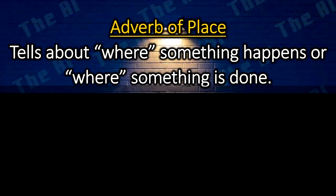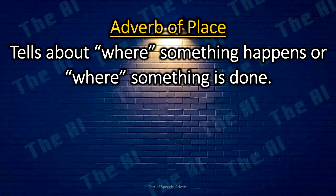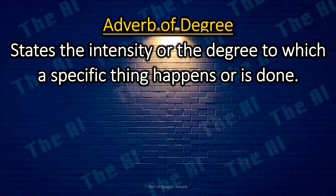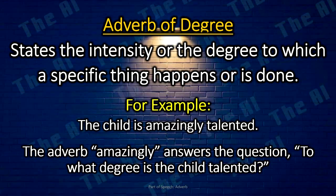Adverb of place. The adverb of place tells something about where something happens or where something is done. For example: I looked everywhere. The adverb everywhere tells where I looked. Adverb of degree. The adverb of degree states the intensity or the degree to which a specific thing happens or is done. For example: The child is amazingly talented. The adverb amazingly answers the question: to what degree is the child talented?